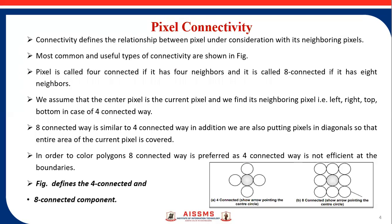What is meant by pixel connectivity? This connectivity defines the relationship between the pixel under consideration and its neighbouring pixels. A pixel is called 4-connected if it has 4 neighbours, and it is called 8-connected if it has 8 neighbours. In the 4-connected way, we find the neighbouring pixels that are left, right, top, and bottom. In the 8-connected way, we additionally consider the diagonal pixels.